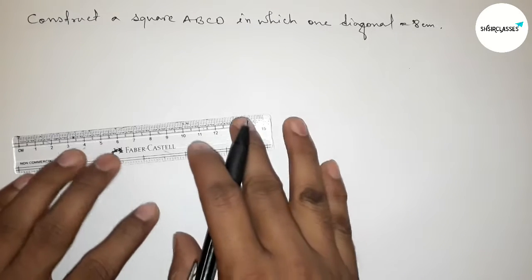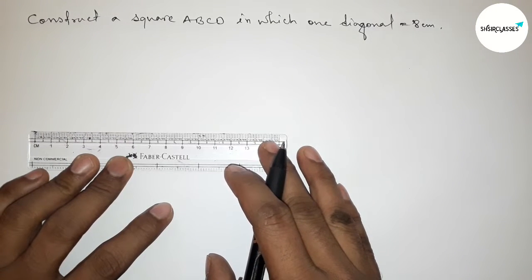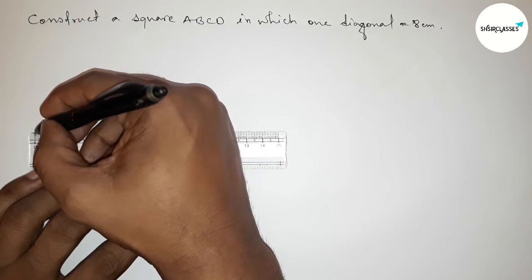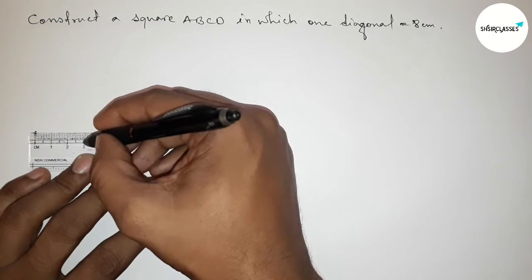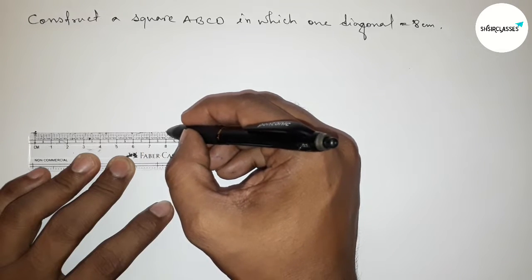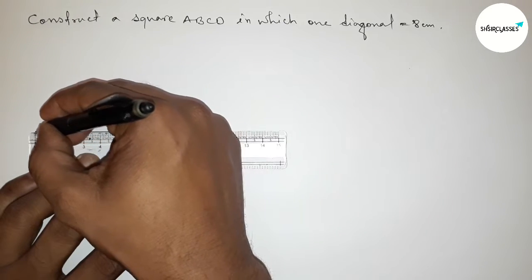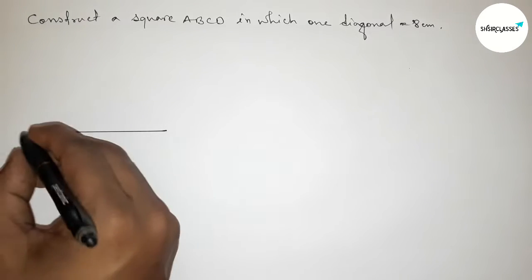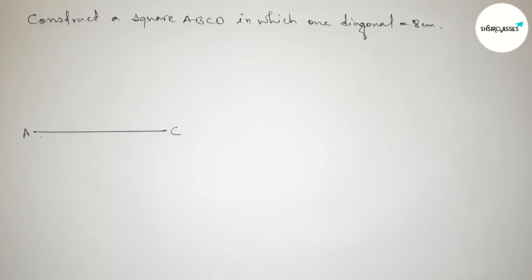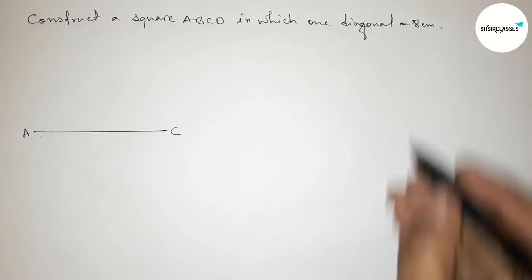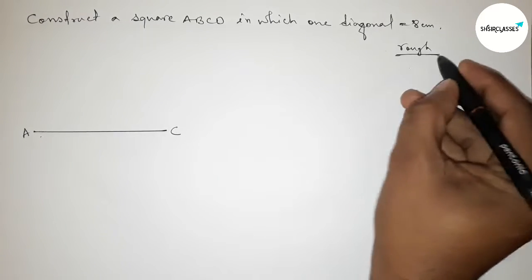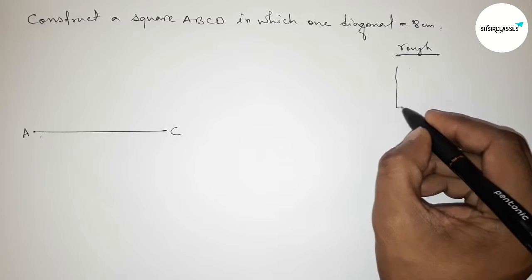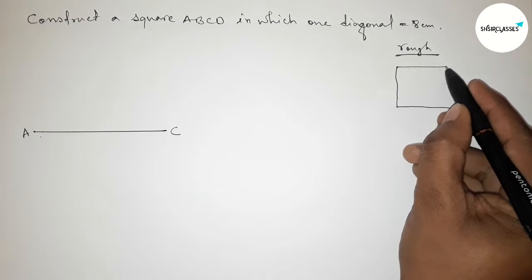First of all, with the help of a scale, drawing the diagonal 8 centimeters. This is starting at 0 — 1, 2, 3, 4, 5, 6, 7, 8 — so this is an 8 centimeter line segment. Now taking here A and here C, so AC equals 8 centimeters.